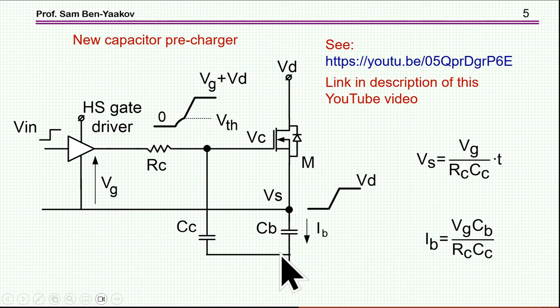And it turns out that the current through this capacitor is this expression here, which is this drive voltage Vg. This is the voltage here, divided by the resistance Rc, this resistor here, and the ratio of this capacitor between the capacitor that we are to charge Cb and this auxiliary capacitor Cc.